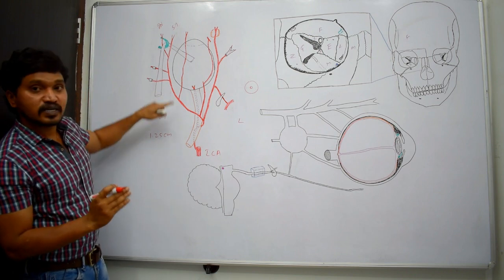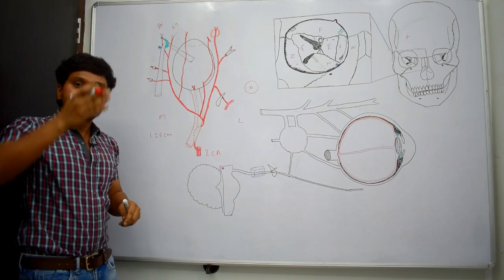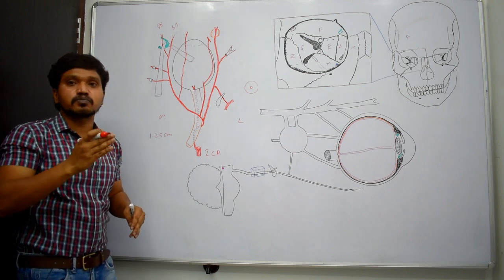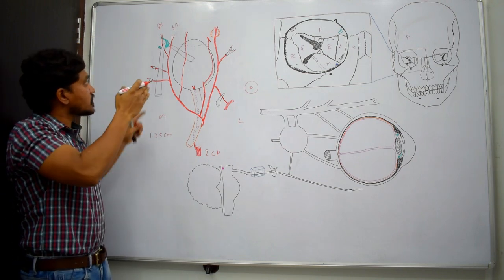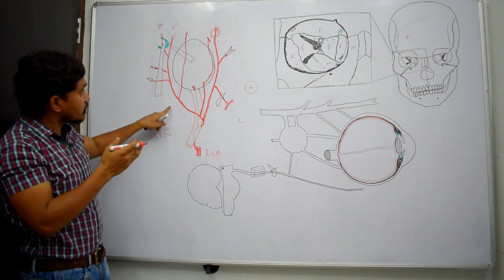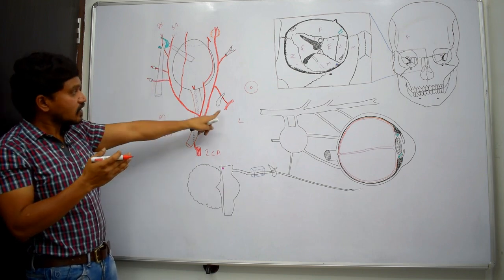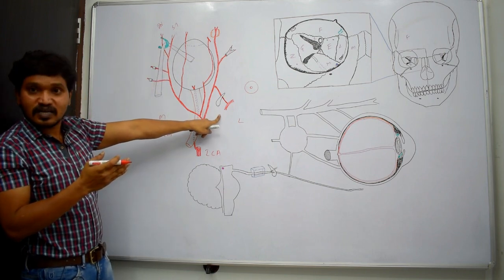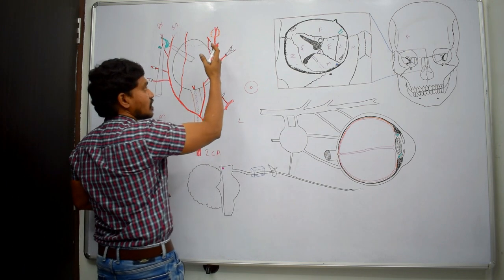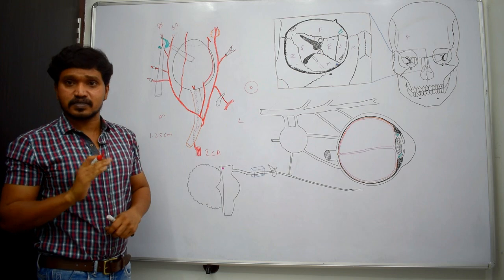The main trunk passes in between the superior oblique above and the medial rectus below — that means, between the superior oblique and medial rectus, the main trunk passes along the medial wall. The lacrimal artery passes along the lateral wall above the lateral rectus muscle.